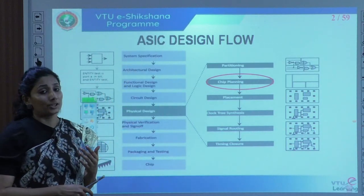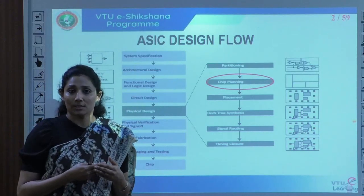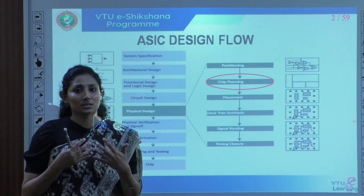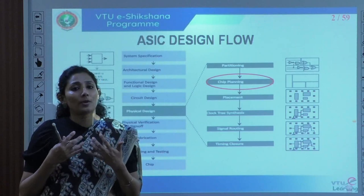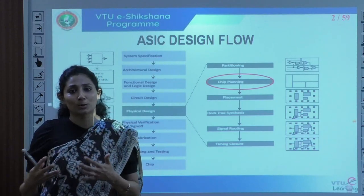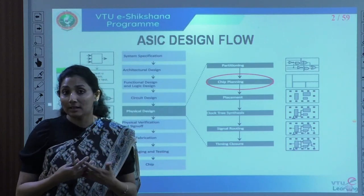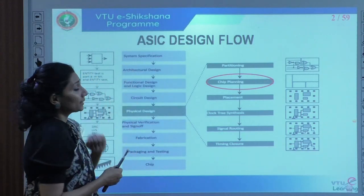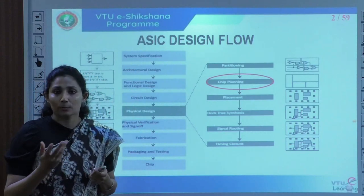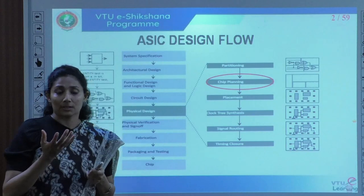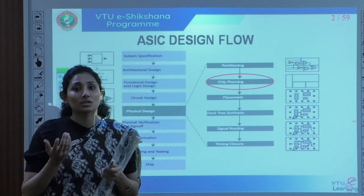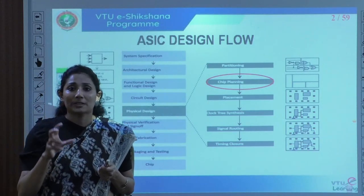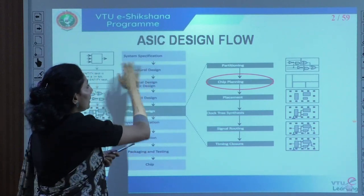The ASIC design flow starts with system specifications — what is this design for and under which technology it is designed. When I say technology, we relate it to the minimum possible wire length, more specifically the channel length — the feature size of the transistor used to fabricate a chip. For example, if you are designing a processor, it will have a memory unit, a CPU, ALU, etc. All these become logic specifications, given functionally at the very first stage.